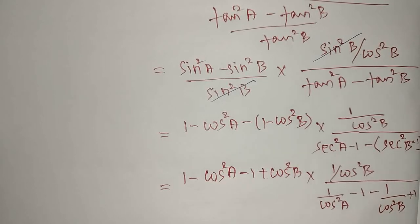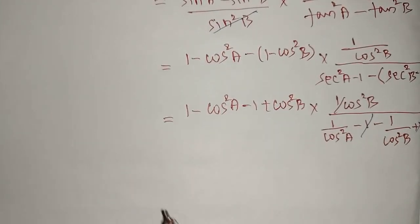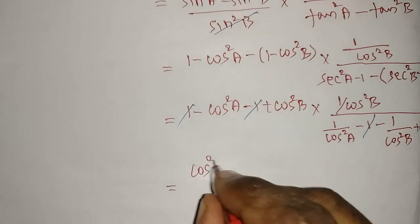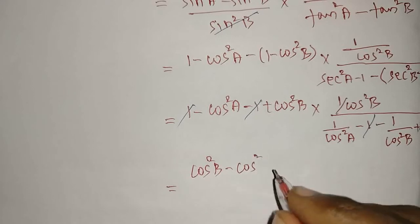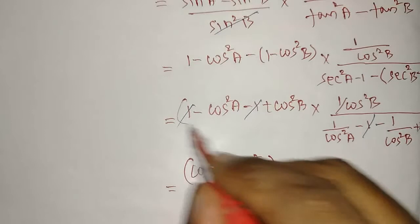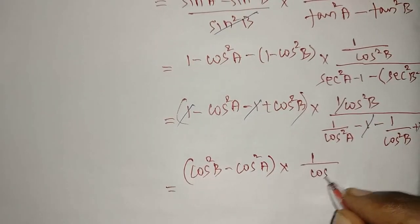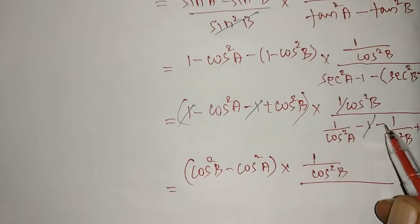The +1 and -1 cancel in both numerator and denominator. In the numerator, we are left with cos²B - cos²A. In the denominator, we have 1/cos²A - 1/cos²B. Taking common denominator cos²A·cos²B for the denominator part gives: (cos²B - cos²A) divided by (cos²A·cos²B).